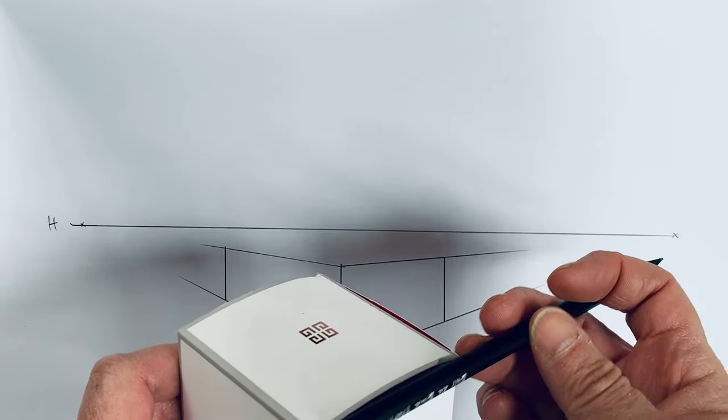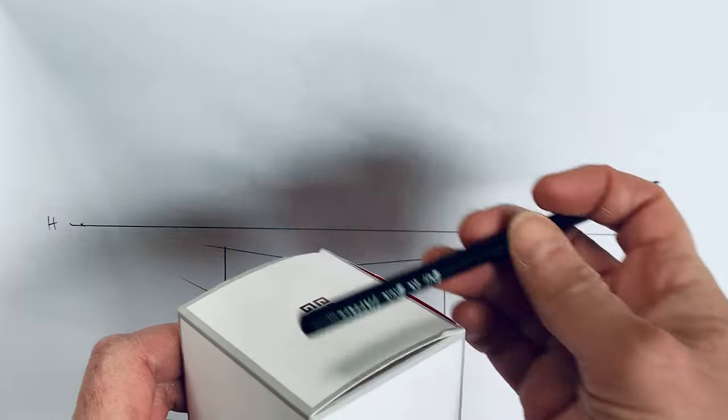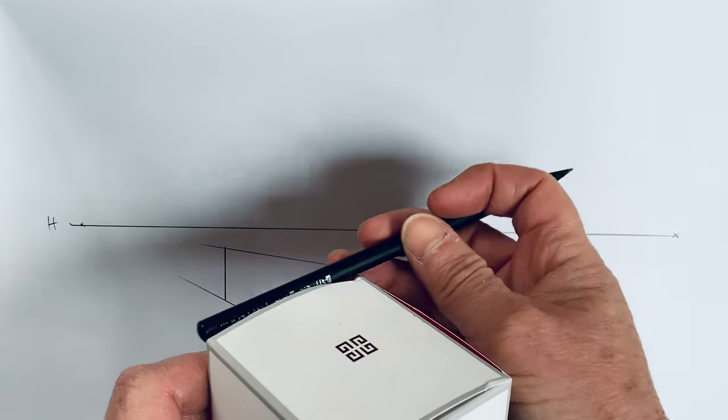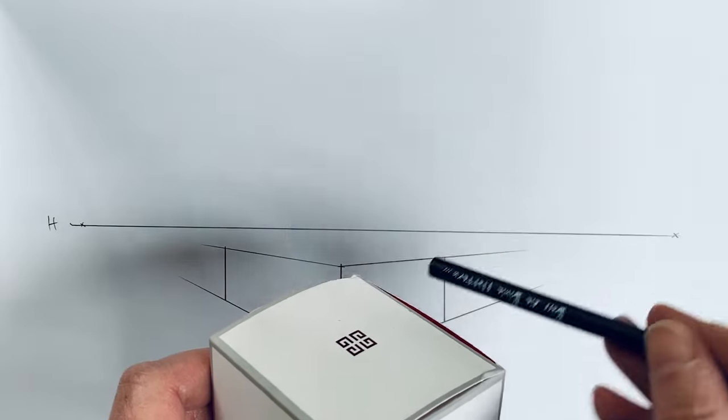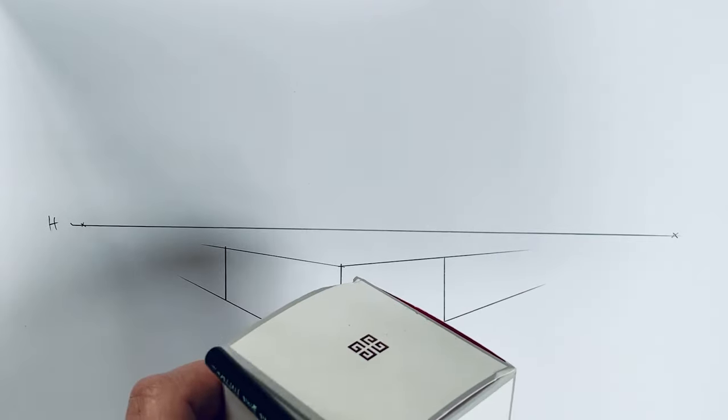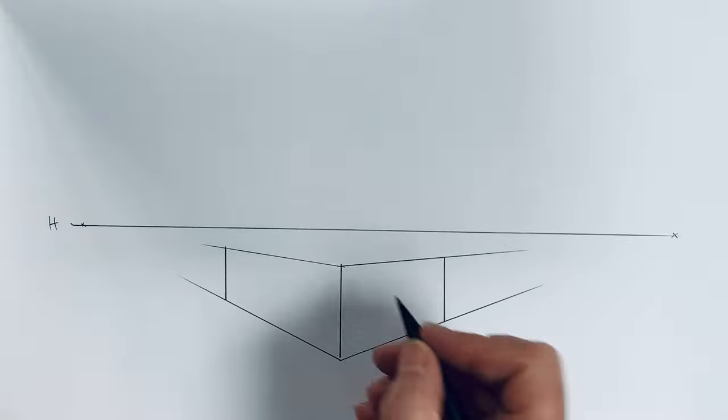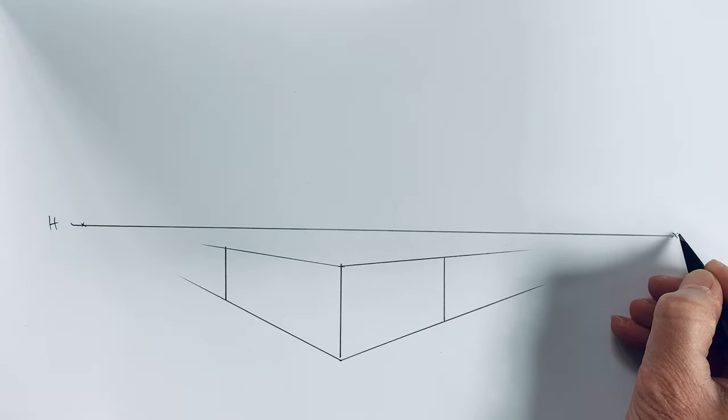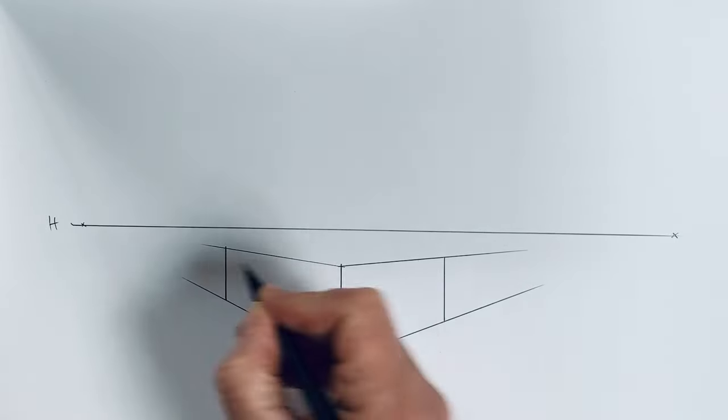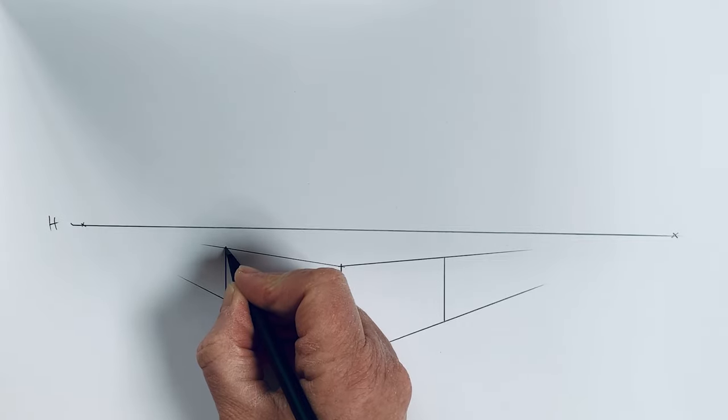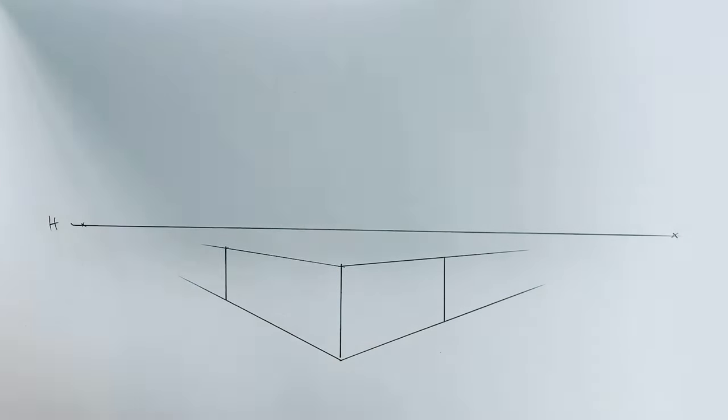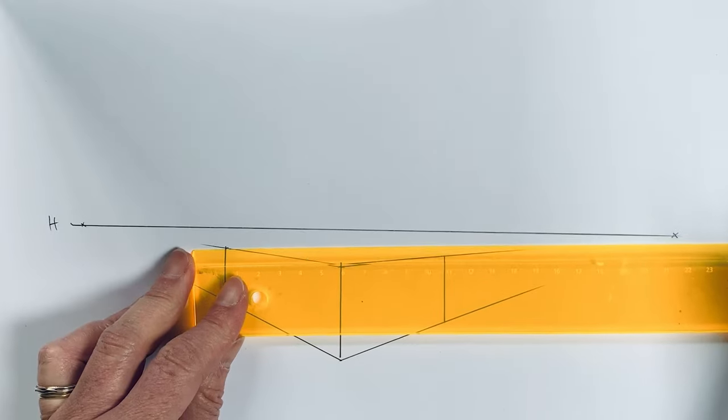And parallel lines have the same vanishing points. So these two lines have vanishing points together, and these two lines have vanishing points together. What does this mean? So these two lines have the same vanishing point like the one that starts here behind, so we can draw it.